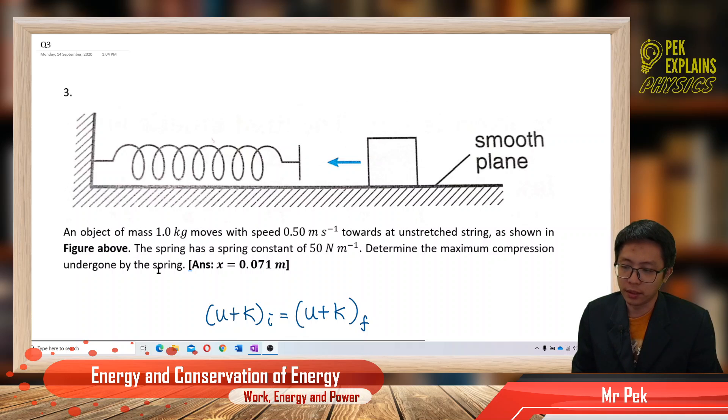This problem involves elastic potential energy. The information given includes the mass of the block, the initial speed, and the spring constant k. We want to find the maximum compression by the spring, which we'll call x.